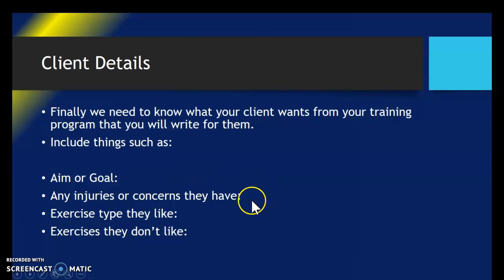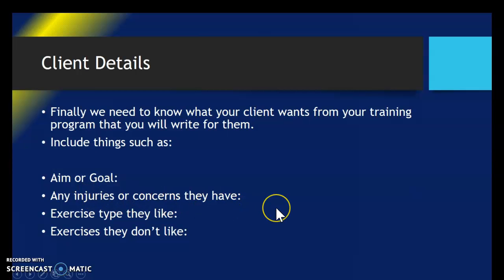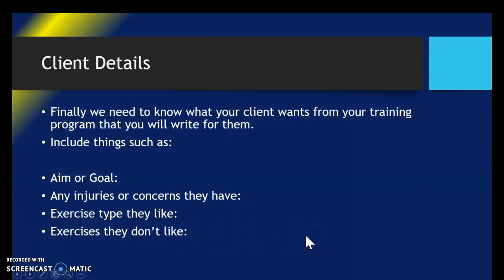You also need to find out if your client has any injuries or concerns about doing physical activity. They might say they're asthmatic and running a lot might not be great, or they have a sore knee and need to avoid exercises that put pressure on it. Plan around that for your client. Find out what they like and don't like to do — if they hate running, come up with alternatives like skipping. That's all you're doing for Section B. Good luck.